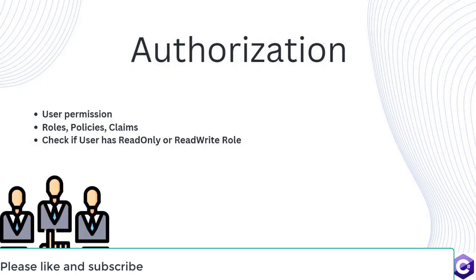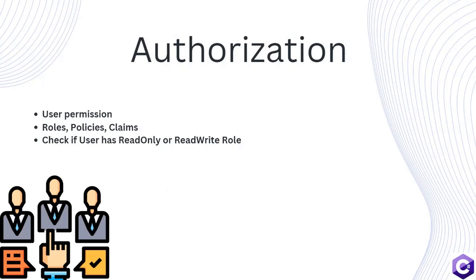Authorization, on the other hand, refers to the process of determining whether a user has permission to perform a certain action or access a particular resource. Authorization can be based on various factors such as roles, policies, claims, and authentication status. Roles define a set of permissions that can be assigned to users. For example, after authentication, we will check if the user has a read-only role or a read-write role.